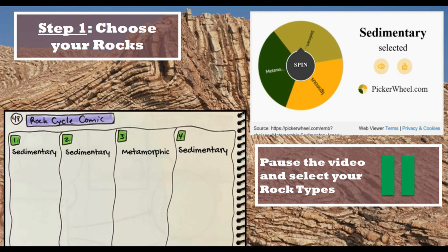If you accidentally get the same exact pattern — sedimentary, sedimentary, metamorphic, and sedimentary — then I want you to spin again until you get something different. I will not accept any comic strips that come in with my exact same pattern. Please pause the video now, spin the spinner, and decide what your four rock types are going to be.